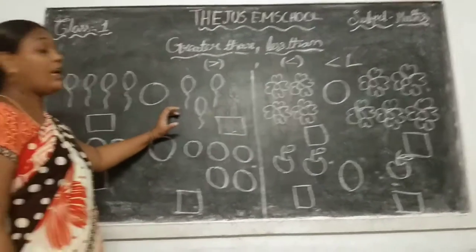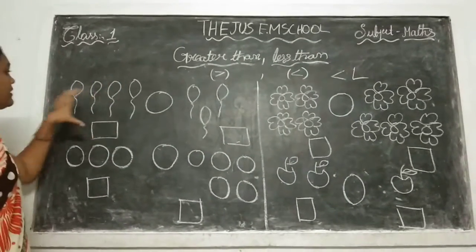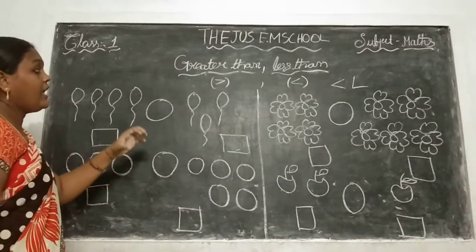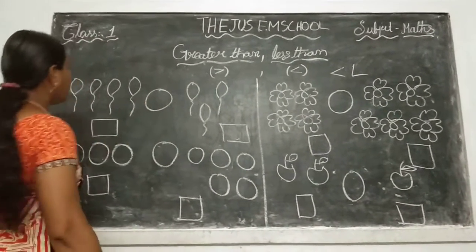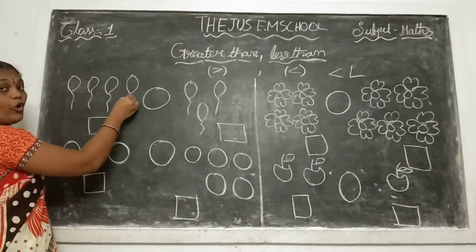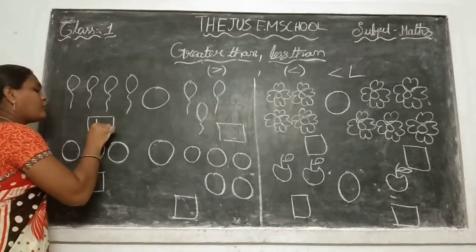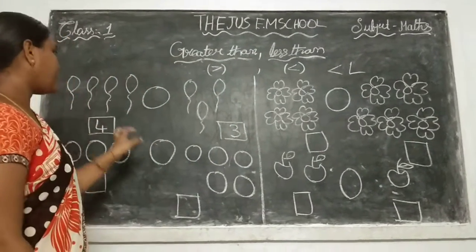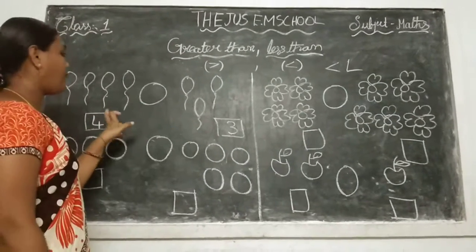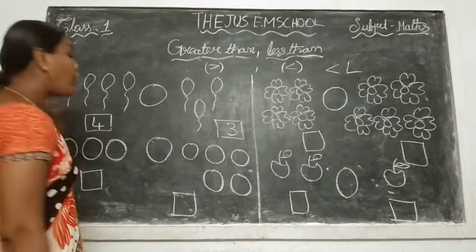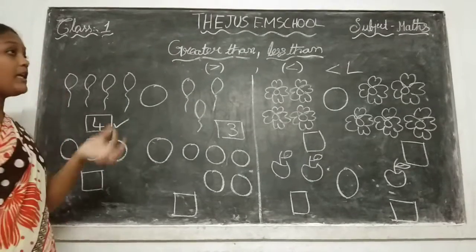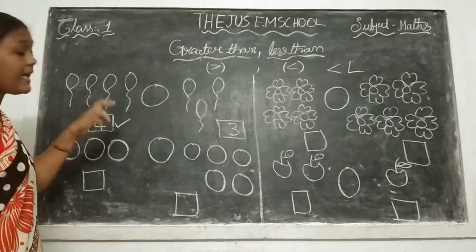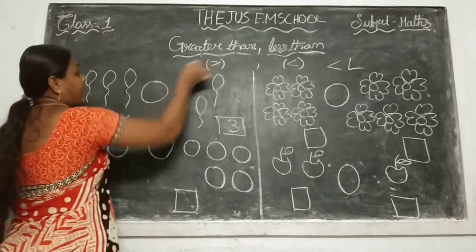Coming to the next one — now identify the symbols. First we will count the pictures and write the numbers, then decide which symbol to put. See here: 1, 2, 3 and 4 — how many balloons? 4. And here: 1, 2 and 3, so 3 balloons. Now compare these 2 numbers, 4 and 3. 4 is the big number, and the big number is at the open mouth side, so that means greater than.